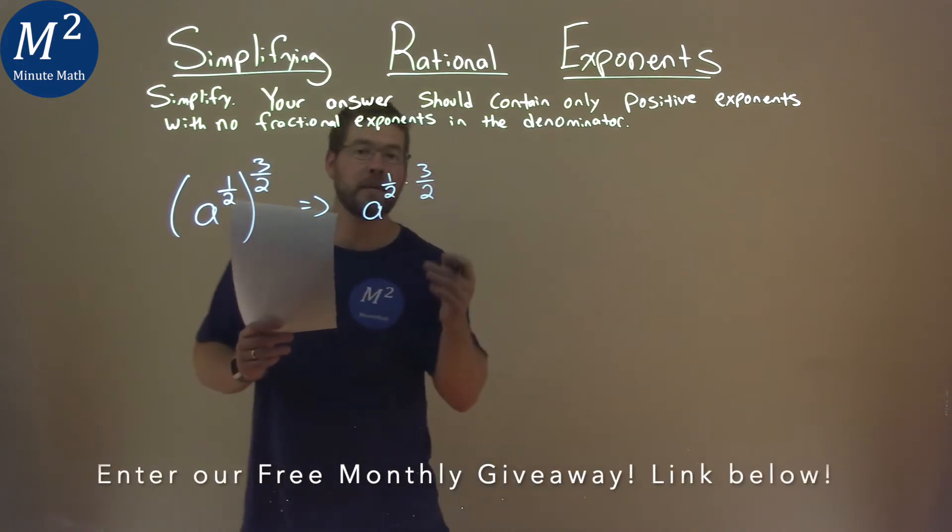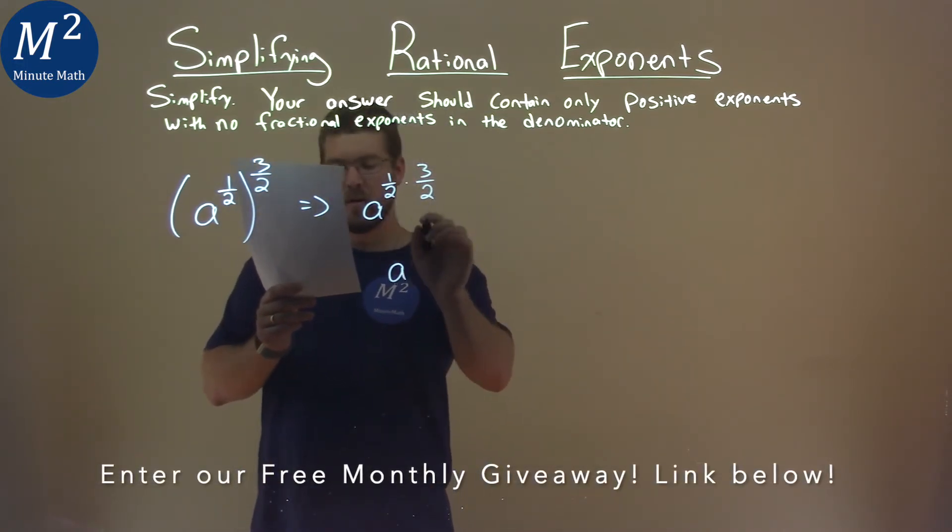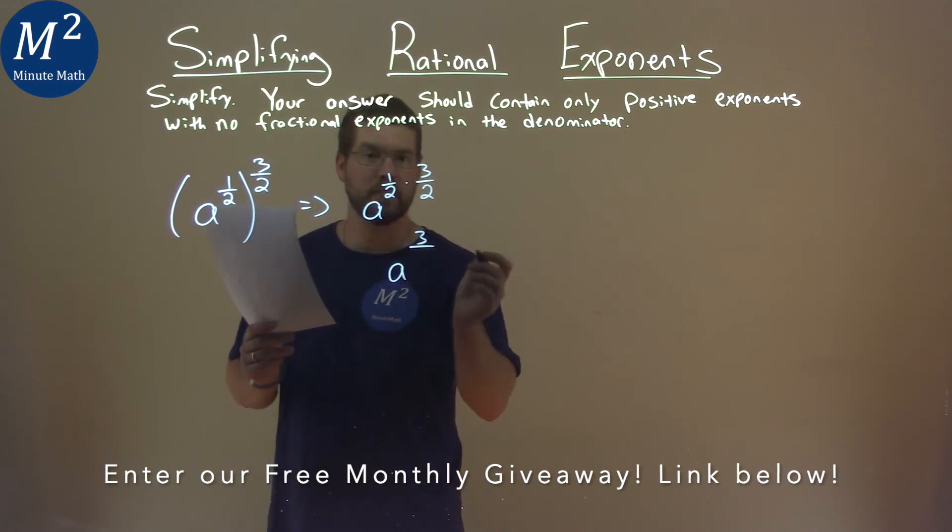Well, what's one-half times three-halves? That's going to be multiplied across the top: one times three is three, and two times two is four.